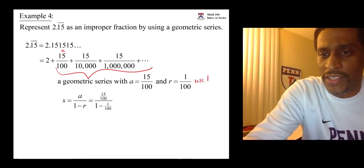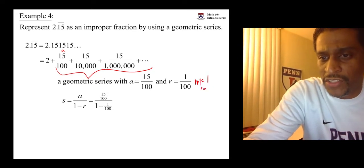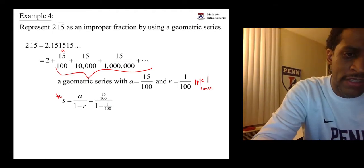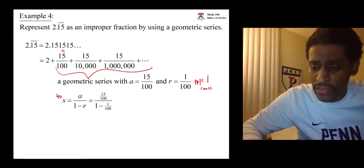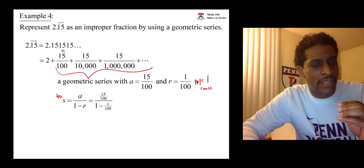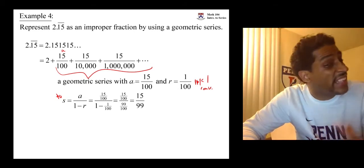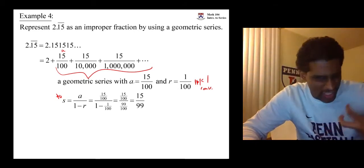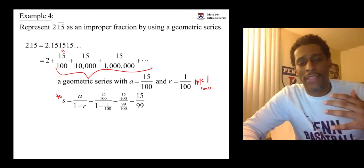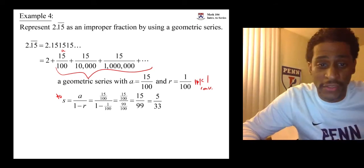Since the absolute value of r is less than one it converges, and it converges to this sum. That gives us fifteen over one hundred in the numerator, and the denominator is ninety-nine over one hundred. The hundreds cancel out, leaving fifteen over ninety-nine. But that should be reduced — three goes into both of them, so it simplifies to five over thirty-three.